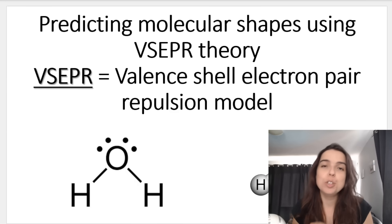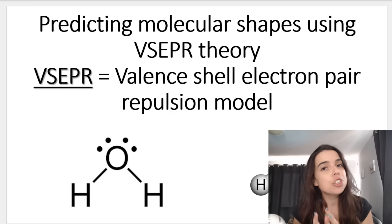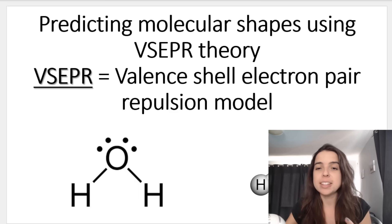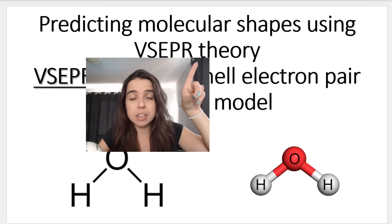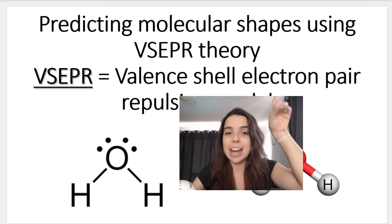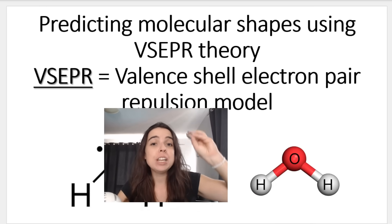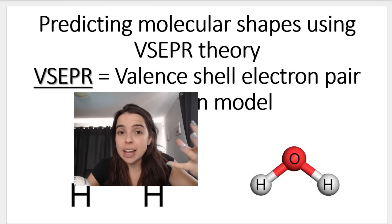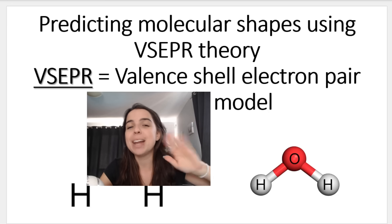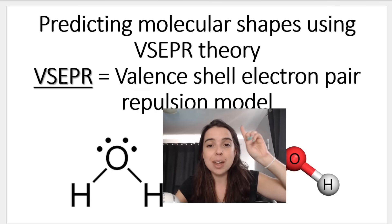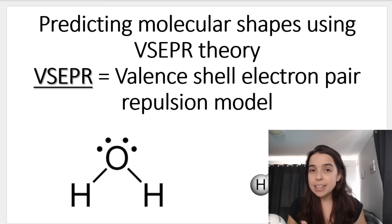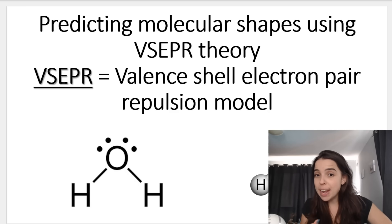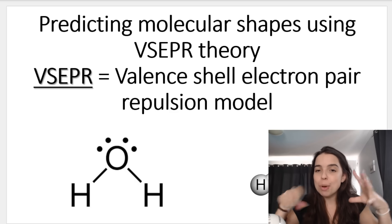We'll be looking at using our Lewis dot diagrams to predict molecular shapes. Now some teachers might not use this word — it's not always in the ATPs, but it is in textbooks and study guides, so I thought I'd mention it. It's called the VSEPR — I just say the VESPA theory. VSEPR stands for valence shell electron pair repulsion model. You don't need to know what it stands for. Basically, this is all about using your Lewis dot diagrams, looking at the bonding pairs and the number of lone pairs on the central atom, to determine the shape that the molecule will have.